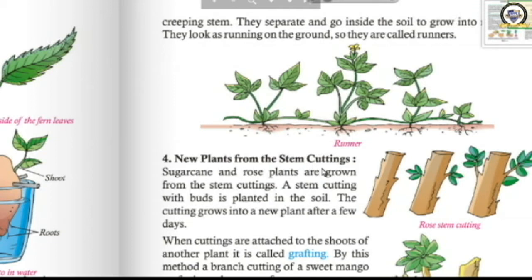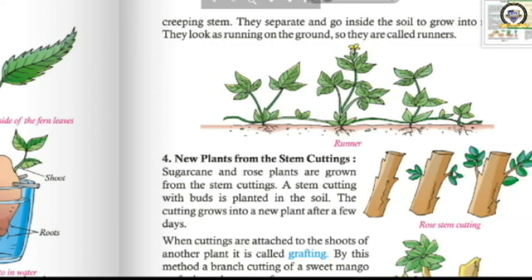Fourth: new plants from stem cuttings. Sugarcane and rose plants are grown from stem cuttings. A stem cutting with buds is planted in the soil and grows into a new plant after a few days. This method is widely used in gardens — plants like hibiscus and jasmine are also planted this way.